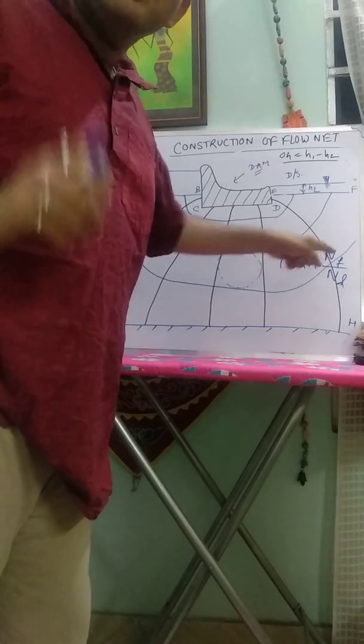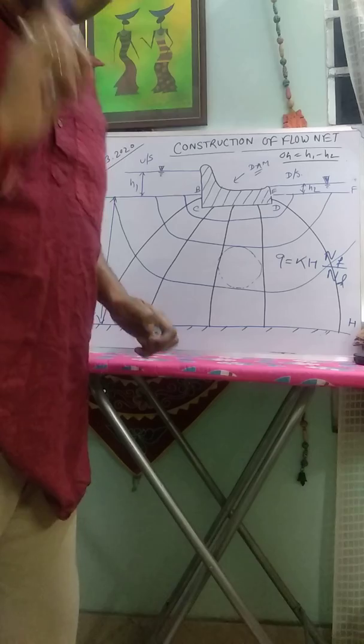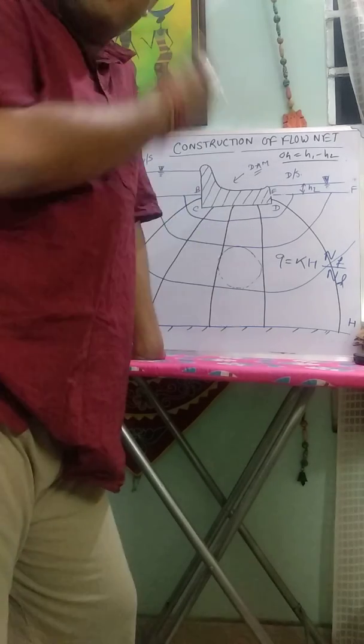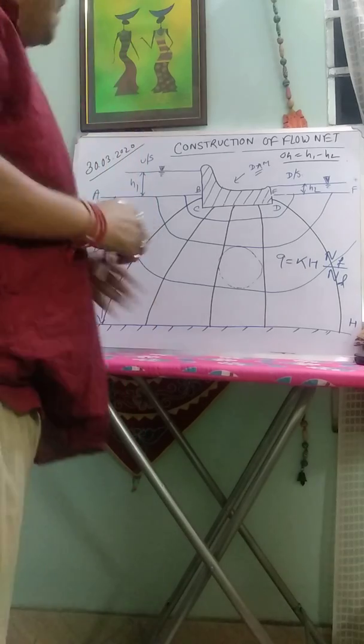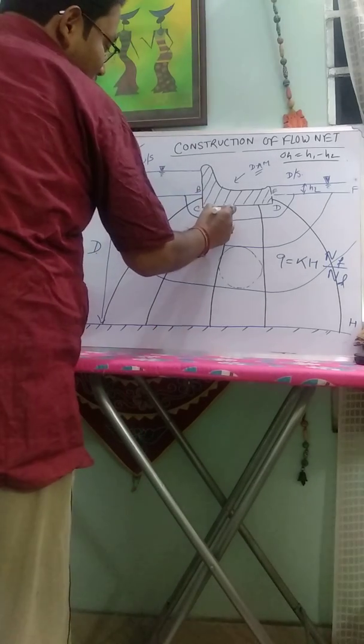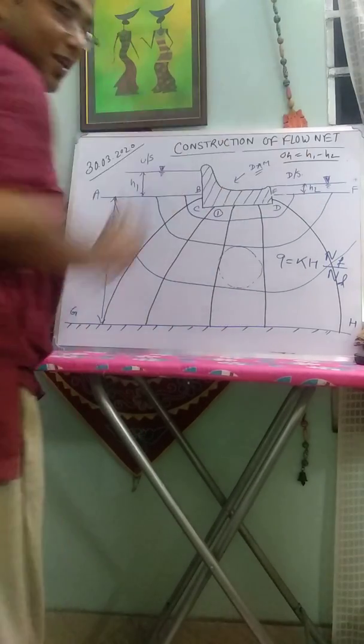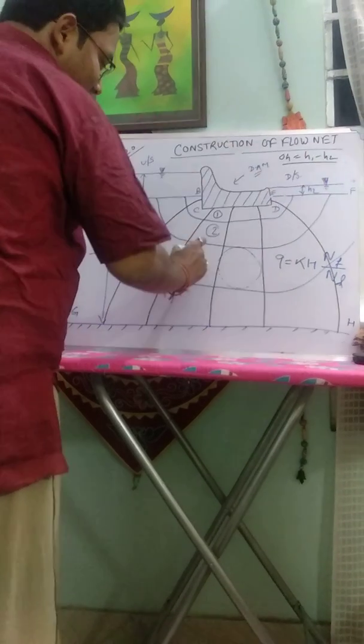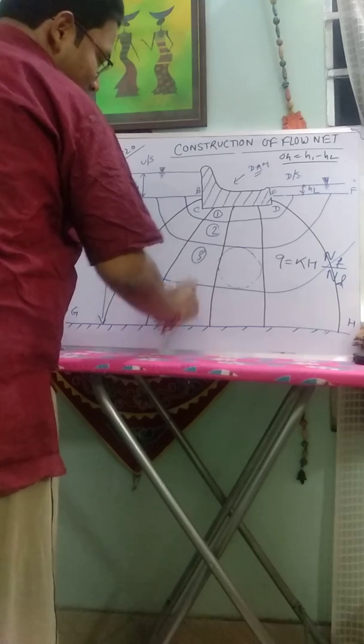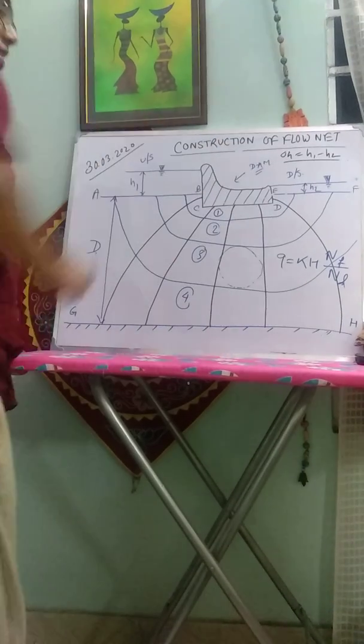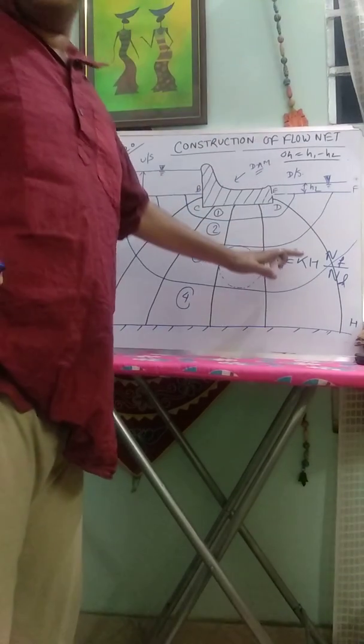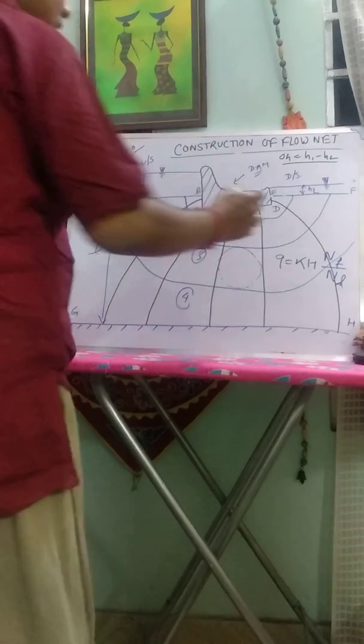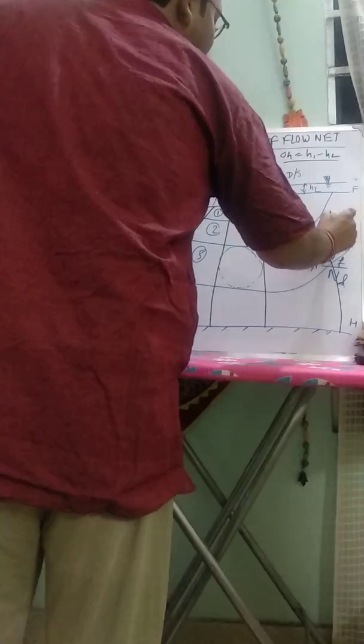And now nf by nd. NF is number of flow lines. Here you can count the number of flow lines: number 1, number 2, number 3, and number 4. The total number of flow lines is 4. This means nf is 4.